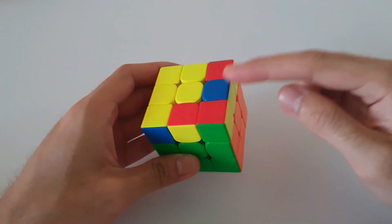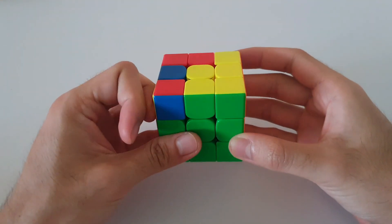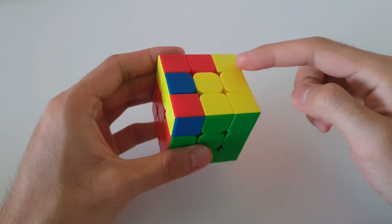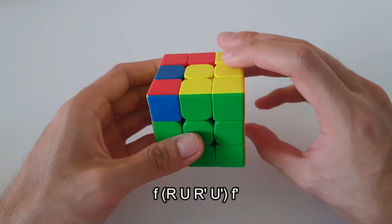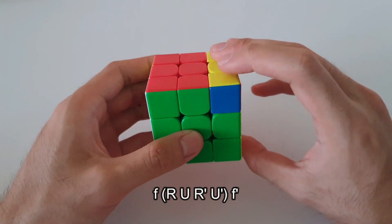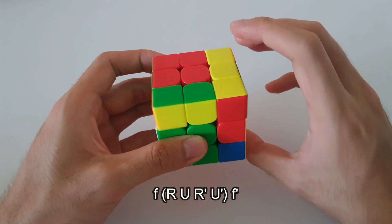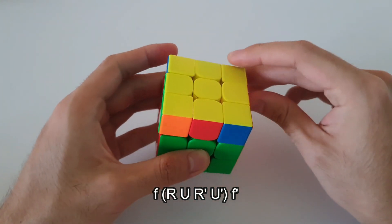Another way to do this case would be to do a U2 so that you're holding the P kind of upside down. Same case as previously, but it can be done from this angle with the wide F move, followed by the regular sexy, and then finish off with a wide F'.